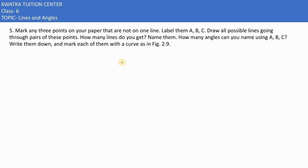Now here in the fifth part of it, it says: mark any three points on your paper that are not on one line. Aisai nahi mark karne straight line. Okay, label them A, B, C. Draw all possible lines through pairs of these points. How many lines do you get?